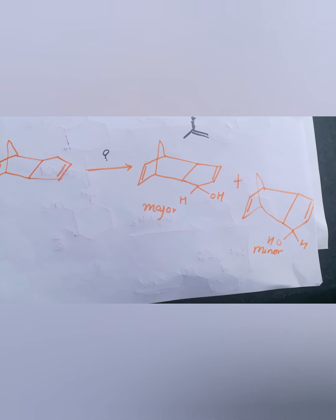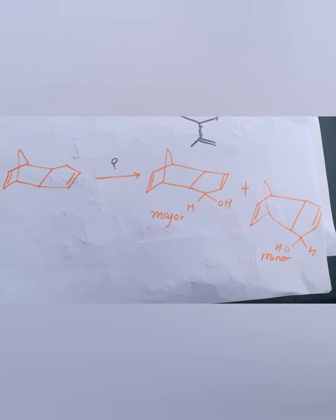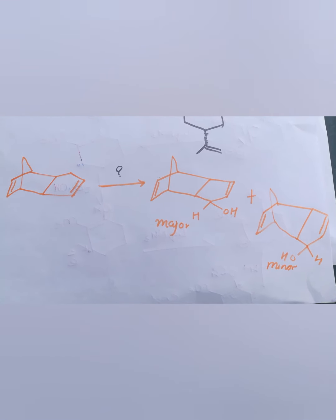As we know, selenium oxide is an oxidizing agent. It is suitable for allylic oxidation of alkenes to allylic alcohols. Therefore, the answer for it is C.